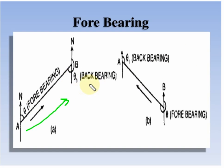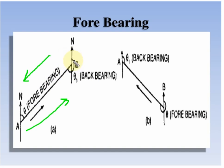Similarly, back bearing is defined as the bearings measured in the opposite direction of the survey. So this is the direction of the survey, and the opposite direction is for the AB line. So the back bearing of AB is theta 1.